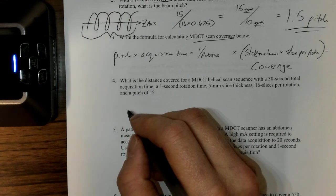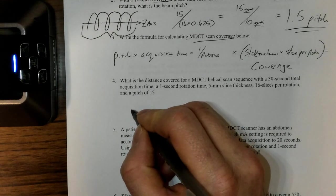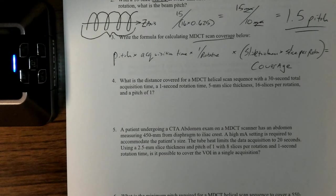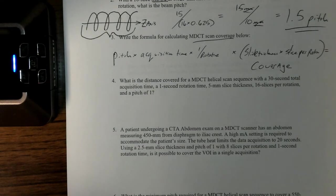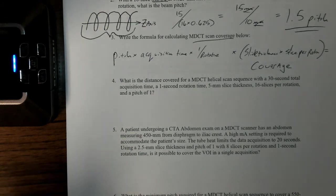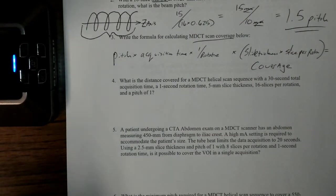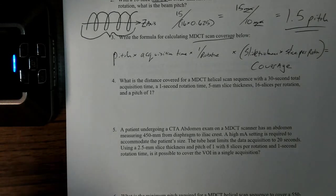That relates to contrast that we're using and how quickly we would need to image the area of interest. What's the distance covered for the MDCT helical scan sequence with 30-second total scan acquisition time, one-second rotation time, 15-millimeter slice thickness, 16 slices per rotation, and a pitch of one? I'll be honest, technologists don't sit around and compute this all day long, but they are thinking about it.